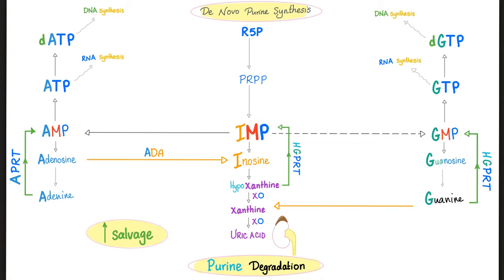For GMP: guanosine would become guanine and guanine was about to be degraded into uric acid but suddenly had a second chance — from guanine back to GMP. The enzyme is hypoxanthine-guanine phosphoribosyltransferase (HGPRT), because the same enzyme also recycles hypoxanthine back to IMP. You end up with AMP, IMP, and GMP respectively. AMP can become dAMP, GMP can become dGTP, and IMP can become either one. This is how you salvage purines instead of wasting them as uric acid.